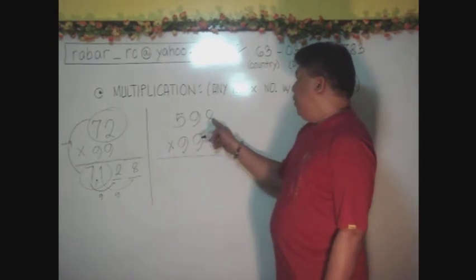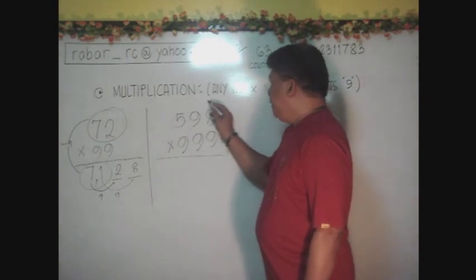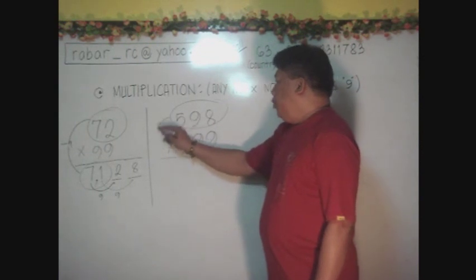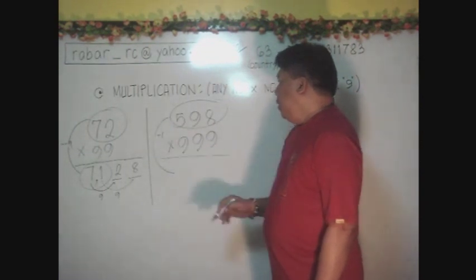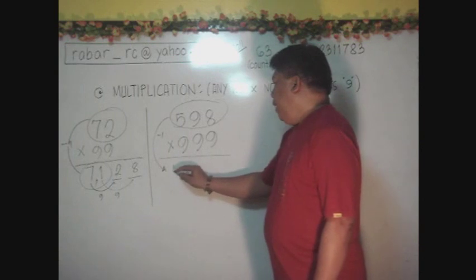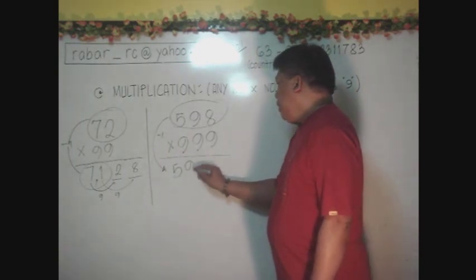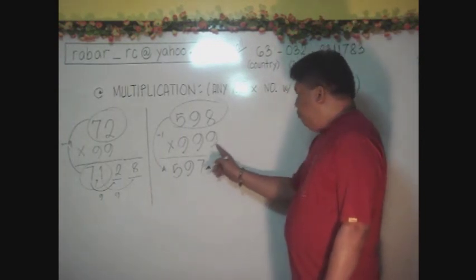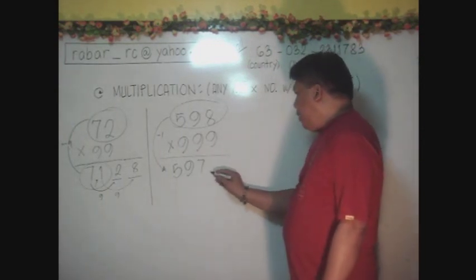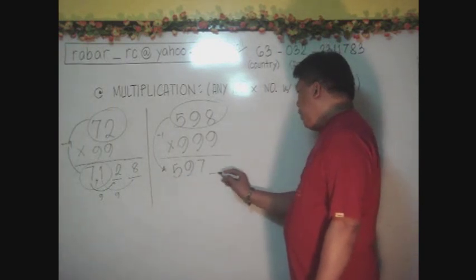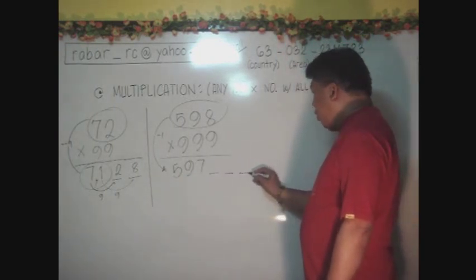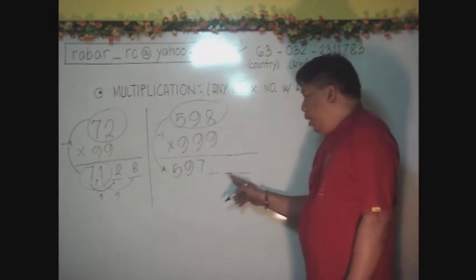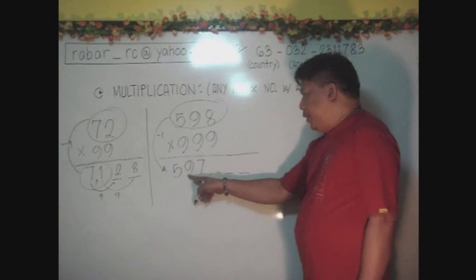Again, you have here to multiply it by 598. Then, minus 1 will give you here 597. Then, since there are 3 nines here or 3 digits, you need 3 digits more to complete the answer. And this 3 digits is coming from the first 3 digits here.